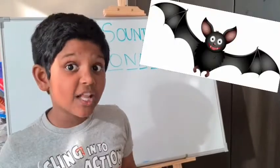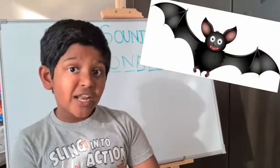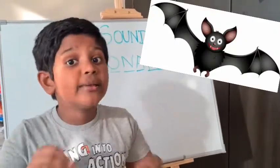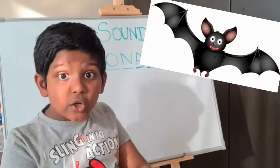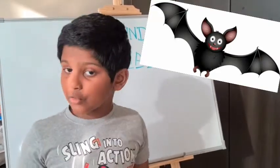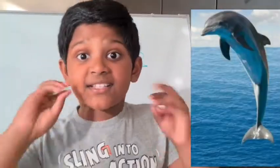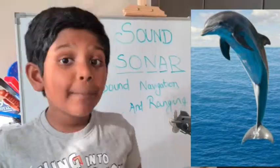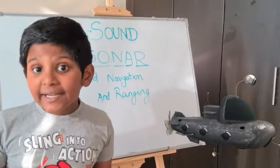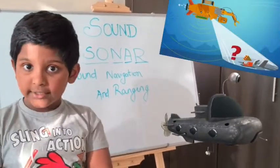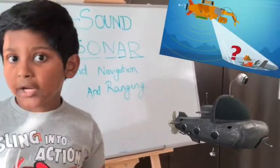Some animals and people use reflected ultrasound waves to detect objects. We know that bats use the echoes of ultrasound waves to find food. Do you know another animal that sends out ultrasound waves? Type your answers in the comment box below. People also use ultrasound echoes to detect objects underwater — this is called sonar.